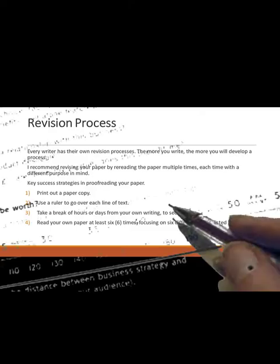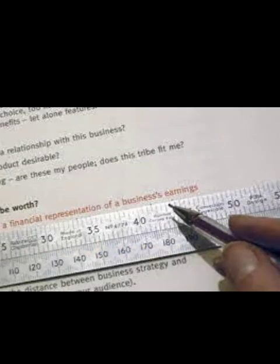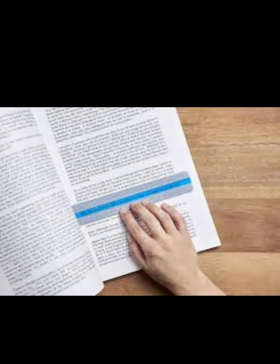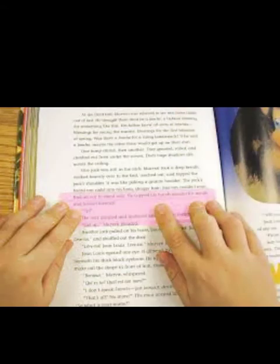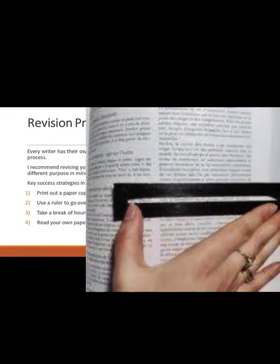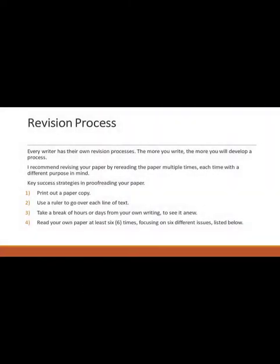Use a ruler to go over each line of text. Grab a ruler and with your printed copy, start at the first line and then go down line by line looking for errors.